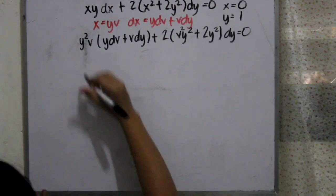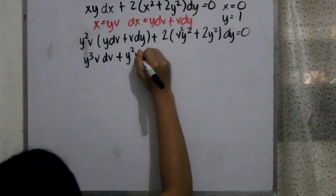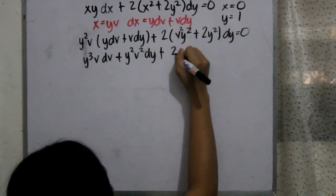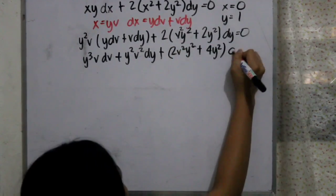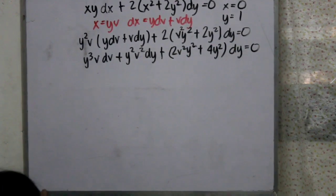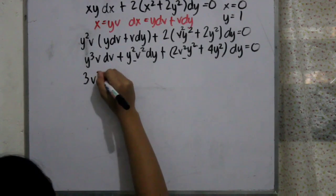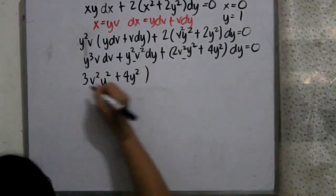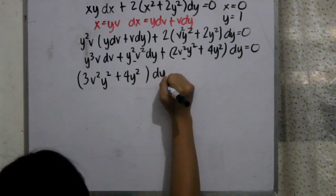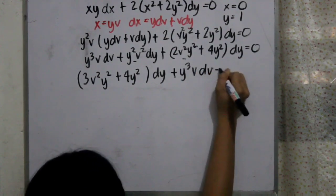After that, we have to distribute. So we will have y·q·v·d plus y²·v²·dy plus 2v²·y² plus 4y²·dy. As we can see, we have like terms, so we have to combine them. We then have 3y²v²·dy plus 4y²·dy plus y³·v·dv, which is equivalent to 0.